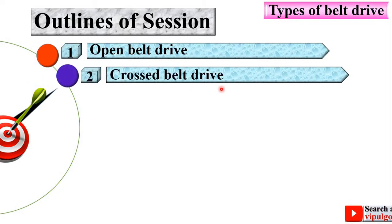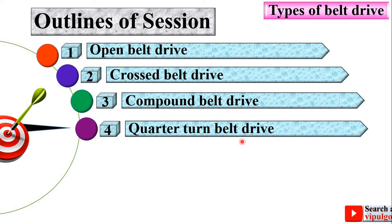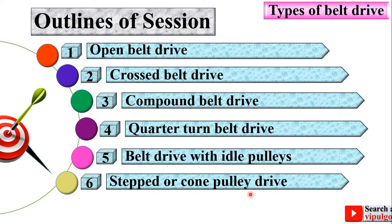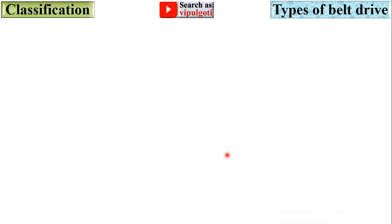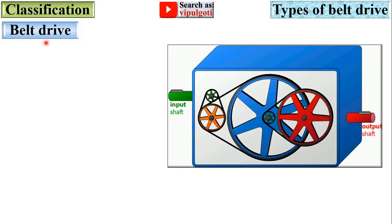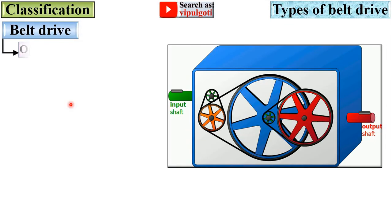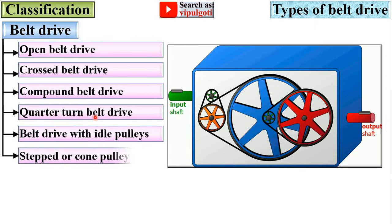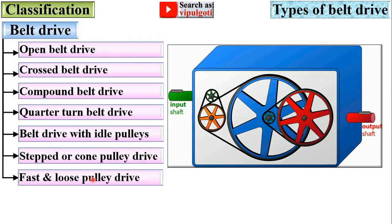then cross belt drive, then compound belt drive, then quarter turn belt drive, then belt drive with idle pulleys, step or cone pulley drive, and at last we will see fast and loose pulley drive. Belt drive is classified as open belt drive, cross belt drive, compound belt drive, quarter turn belt drive, belt drive with idle pulleys, step or cone pulley drive, and fast and loose pulley drive.